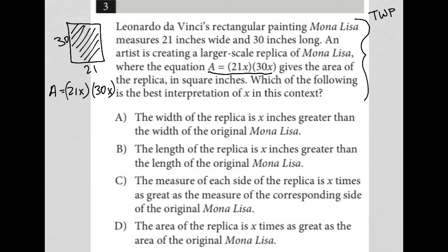Which of the following is the best interpretation of X in this context? Well, I've already kind of mentioned it. X has to be the factor by which you're increasing the size of this replica, because if X, for example, if X were two, we'd end up with a 60 by 42,